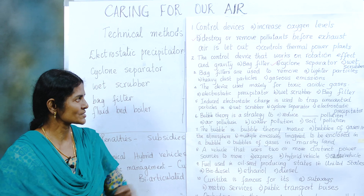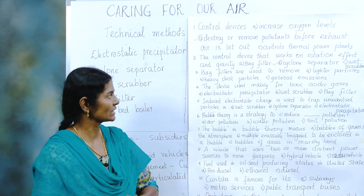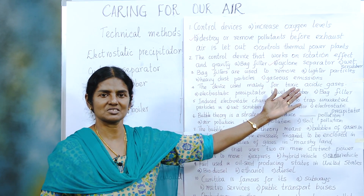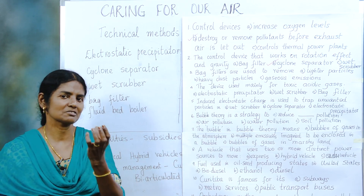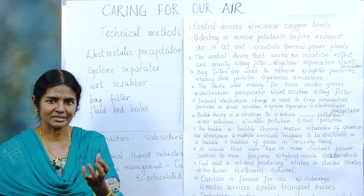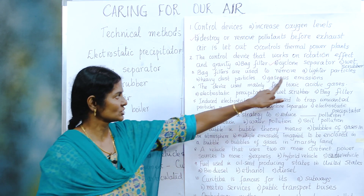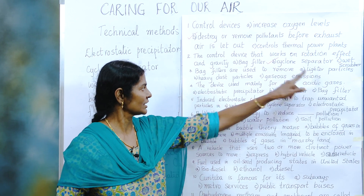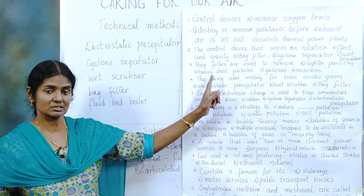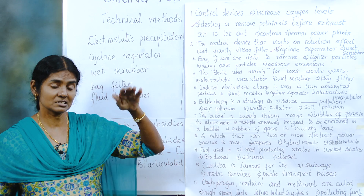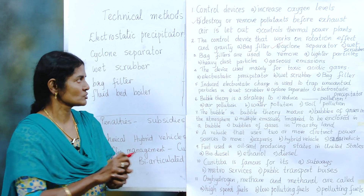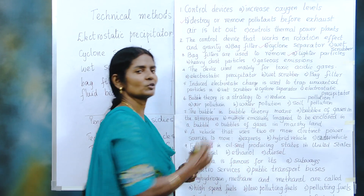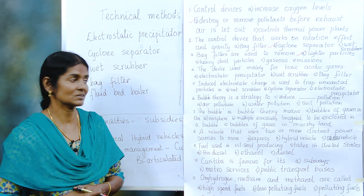Bag filters are used to remove lighter particles, heavy dust particles, or gaseous emissions — which are they going to remove? It is a filter — can it filter gases? Not possible, so that's omitted. Heavy dust particles usually go through the first stage and are removed. So bag filters are specifically used for removal of lighter particles.